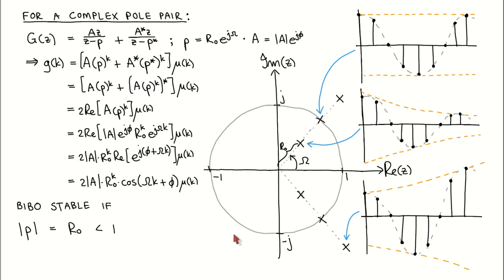A complex pole pair is therefore stable if it lies within the unit circle of the z-plane, and unstable if it lies on or outside the unit circle.